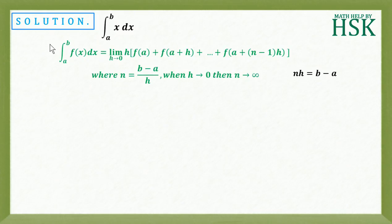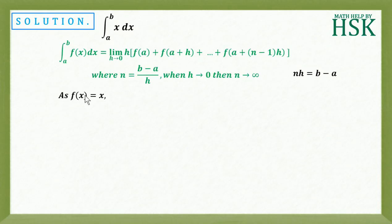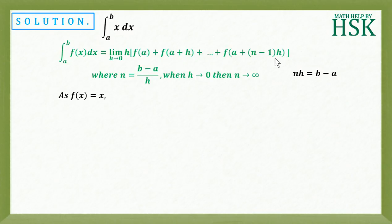Since the question resembles the formula, the first thing we write is that nh = b - a. Next, f(x) = x. To calculate the limit, we first calculate f(a), f(a+h), and up to the last term. The main part of this question is the calculation of the total of these values — if calculated systematically, the question becomes easy.